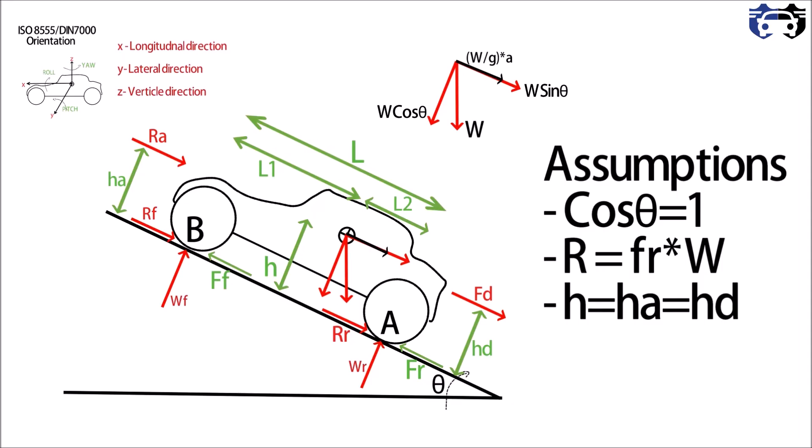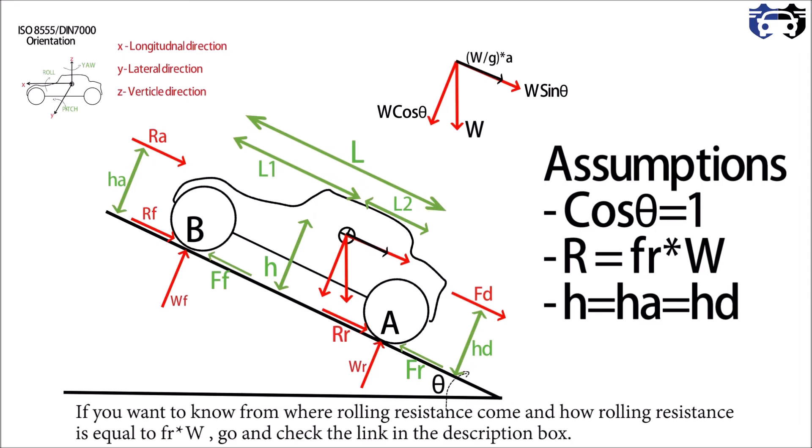If you want to calculate the front rolling resistance, Rf equals fr multiplied by Wf, and the rear rolling resistance is fr multiplied by Wr. So these are the front and rear rolling resistances.